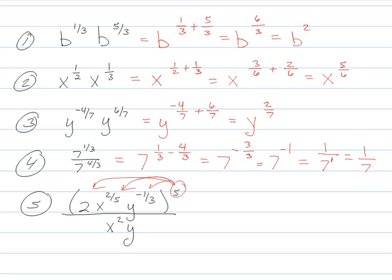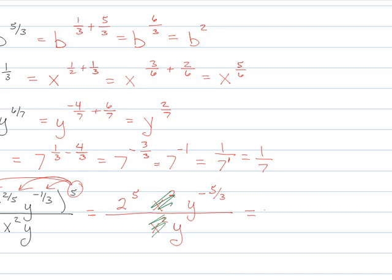This one here is also kind of tricky, remember, because you've got to apply that 5 to each term. So you have to raise everything in there to the fifth power on the top. So 2 to the fifth, x to the 2 fifth times 5 is just going to be 2. And then negative 1 third times 5 is 5 thirds. And then on the bottom, you just leave it the way it is. Now you'll see the x squareds cancel out. So 2 to the fifth, 2 times 2 is 4, times 2 is 8. That's 3, 4, 5. Alright, so we have 32.